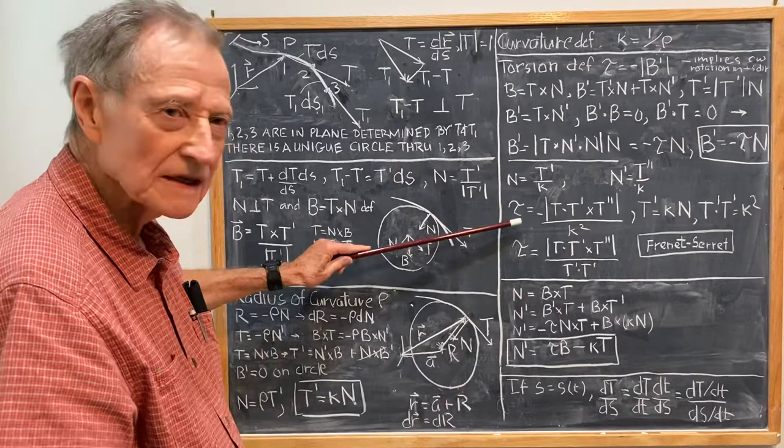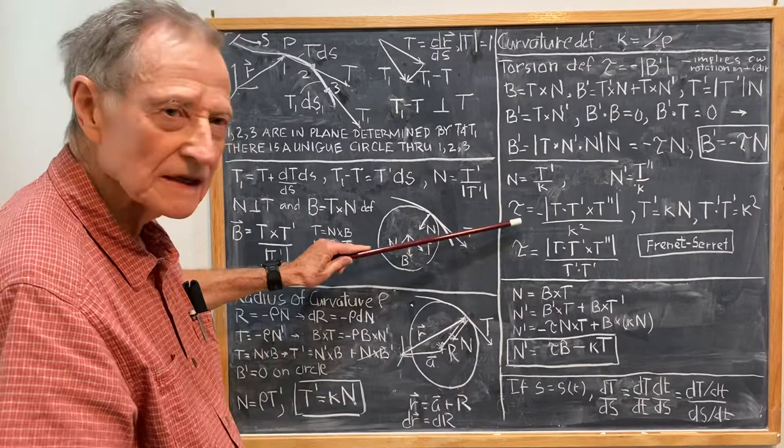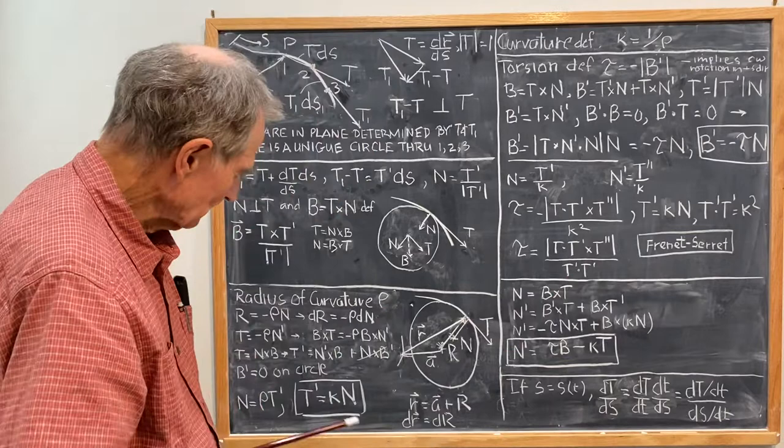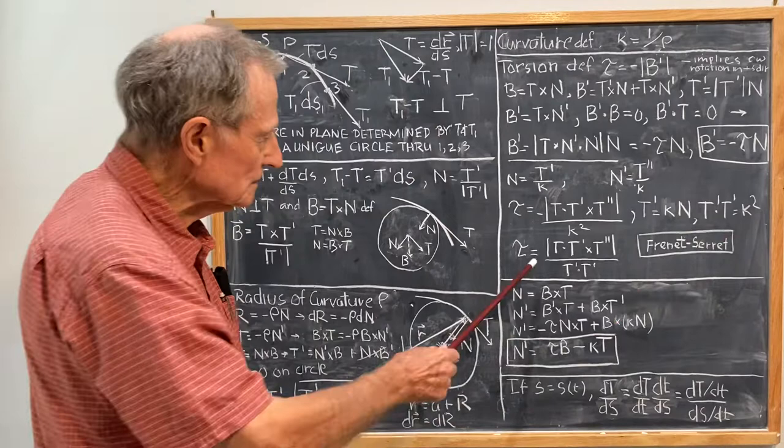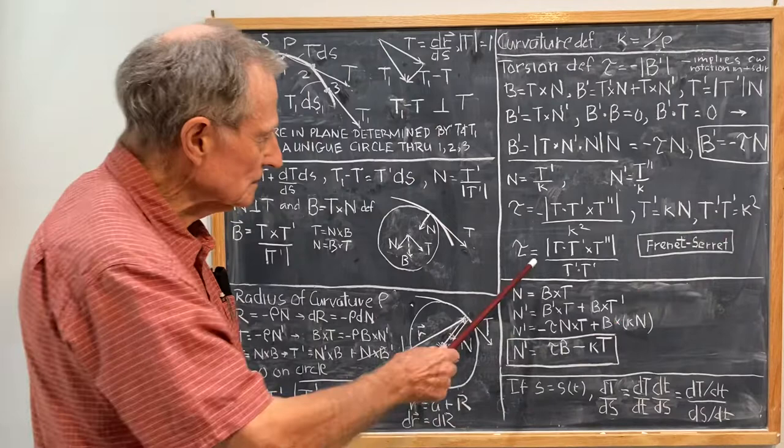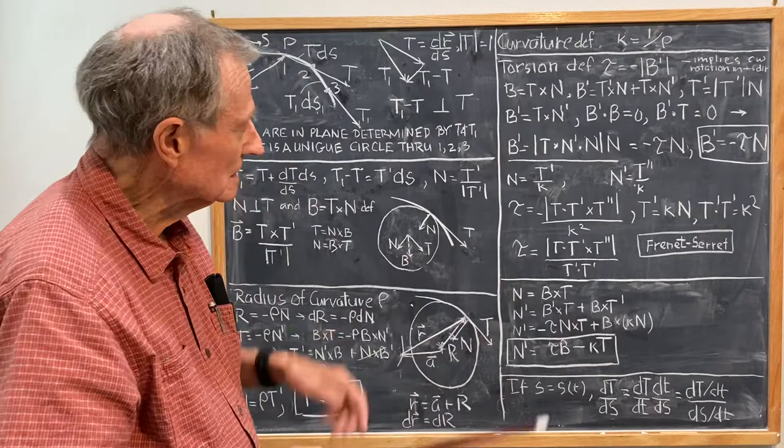That's one form that I've come across, but in another form, if you note that T prime is equal to κ times N, then if you take the dot product of each side with itself, you get T prime dot T prime is equal to κ squared N dot N, so T prime dot T prime is κ squared, which is another form for the torsion formula, for the torsion τ.